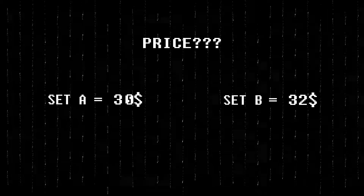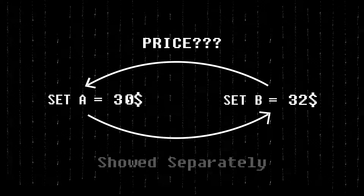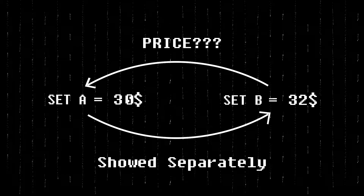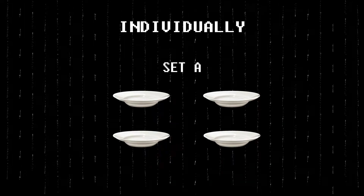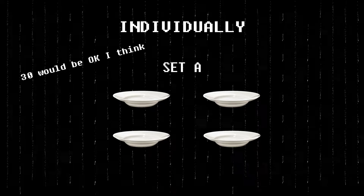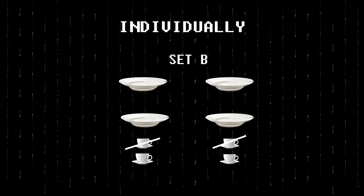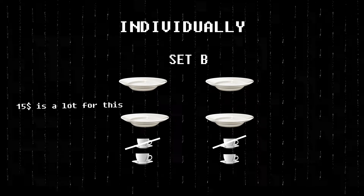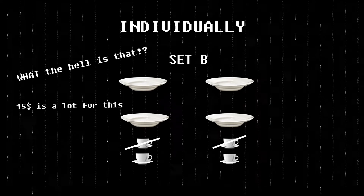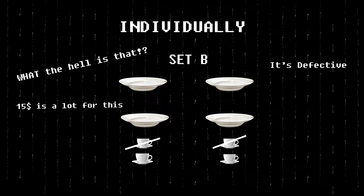But the result is completely reversed when we show each set separately to people. If I show you Set A individually and tell you to give a price, you would say $30. If I show another person Set B individually, he would price it $15 because the set is not complete — he expects a complete set, so he gives a lower price.